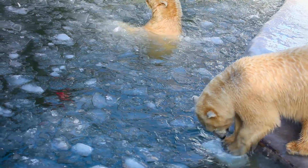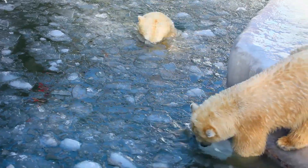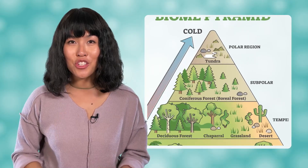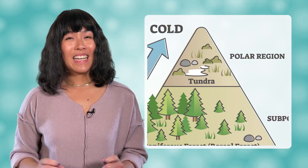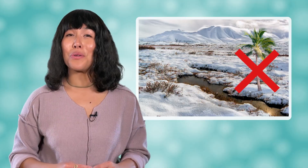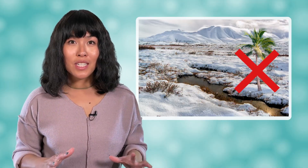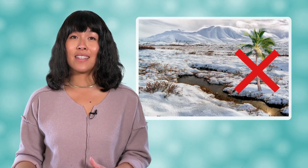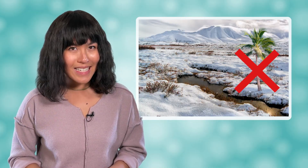How would you describe the biome that these polar bears live in? The first word that comes to mind is probably cold. Polar bears live in a biome known as the tundra, which is definitely very cold. Do you think our little polar bear family would survive if they were moved to a hot desert biome? Probably not. What if we took a palm tree from a tropical biome and moved it to the tundra with the polar bears? How would it fare? Probably not so great. Organisms are adapted to specific biomes, and many would struggle to survive in a biome very different from their natural habitat. We'll look at some of these biomes in detail today.